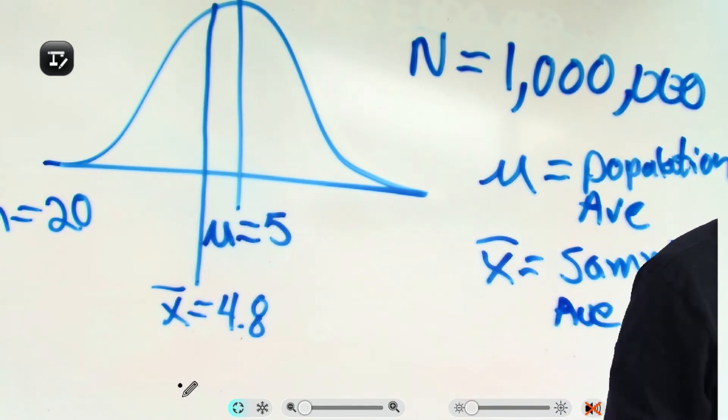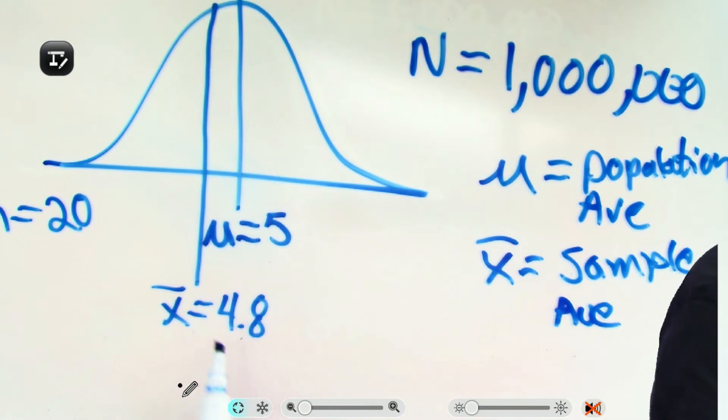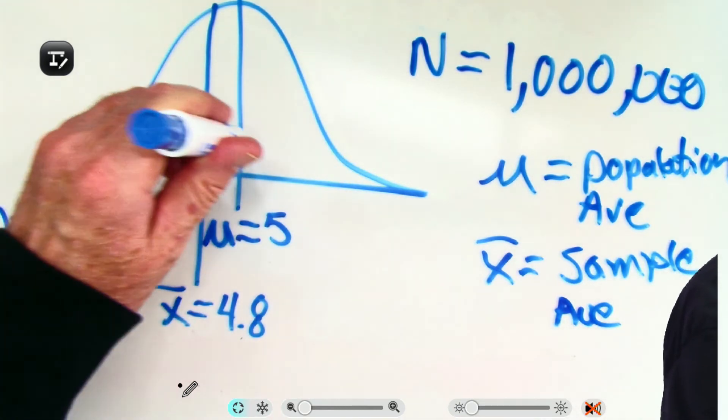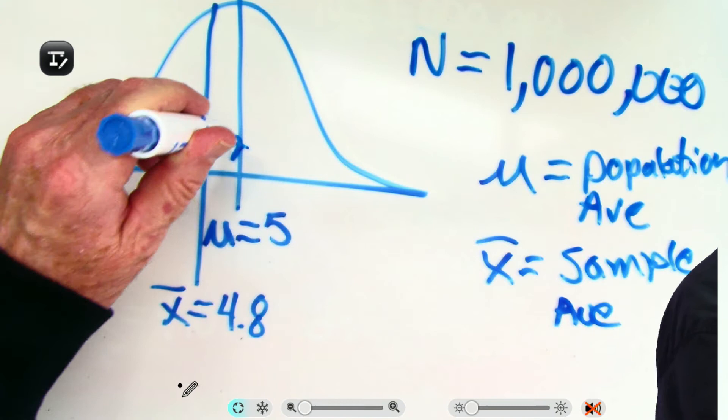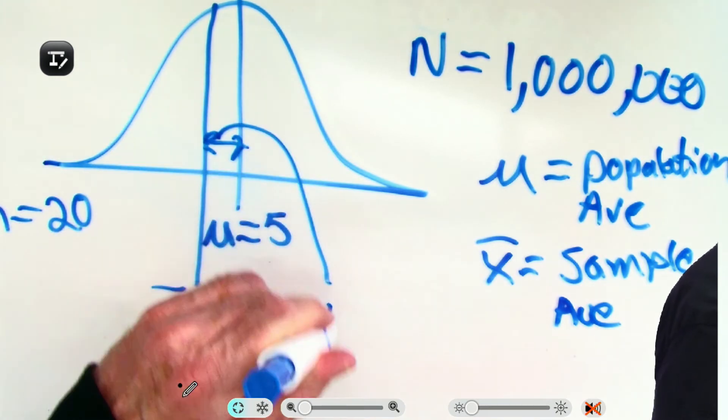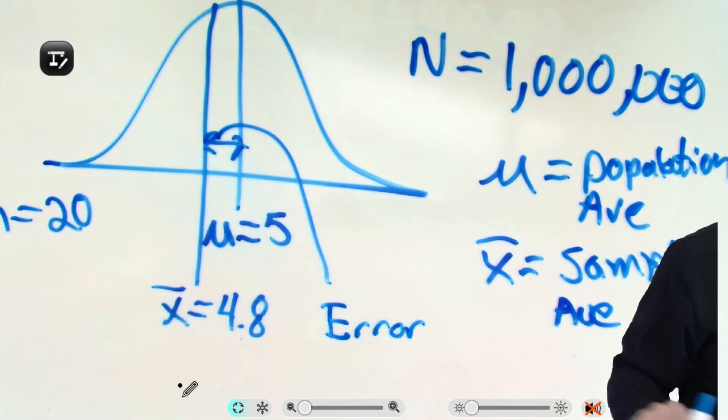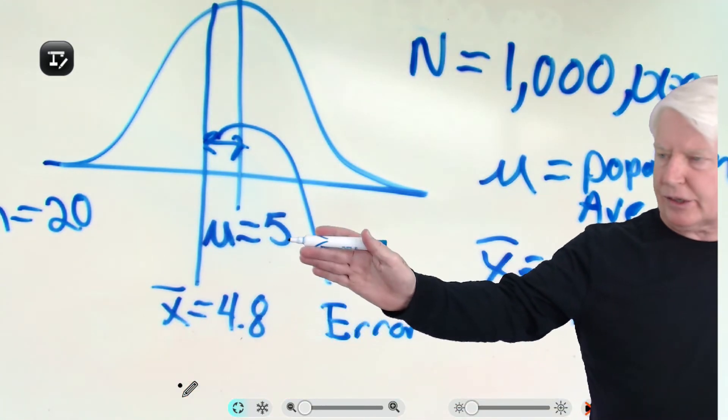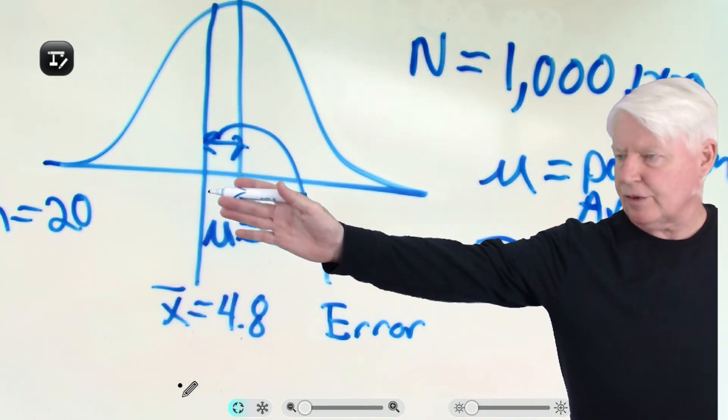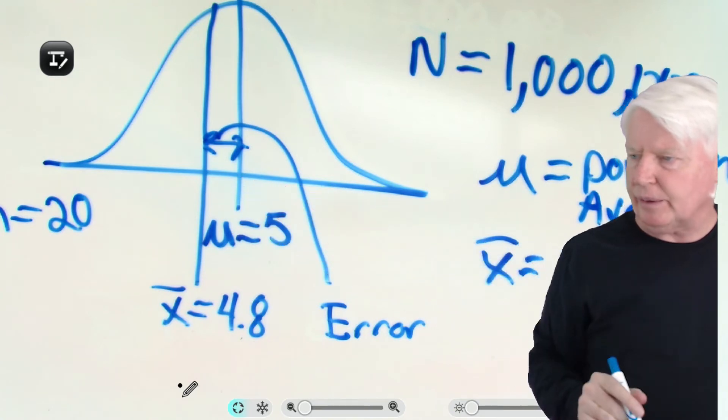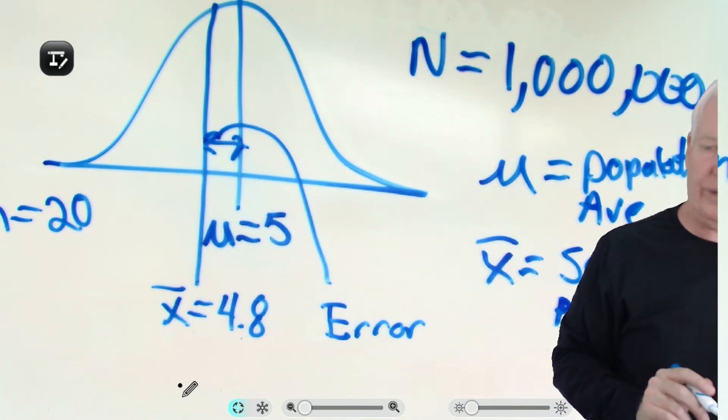Now what would you call that then? This is the actual value, and this is the value you calculated. Well then, I think it only makes sense that you would call that the error. That's right. Because this is your estimate, this is the true value, so that distance from the estimate to the true value is called error. That's your error.